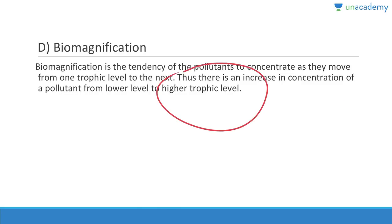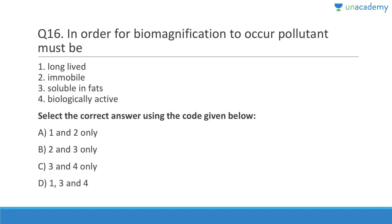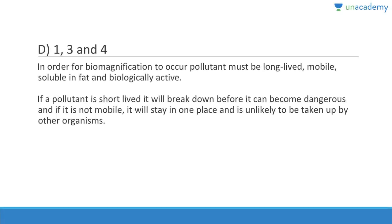Question sixteen: In order for biomagnification to occur, a pollutant must be long-lived — correct. Immobile — that is not needed; in fact it must be mobile. Biologically active — that must be there. Answer is D, one, three, and four. So in order for biomagnification to occur, the pollutant must be mobile, not immobile.